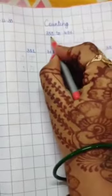Good morning children, this is your maths classwork and today we will write counting 351 to 400. So, let's start.